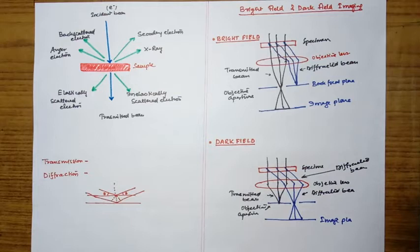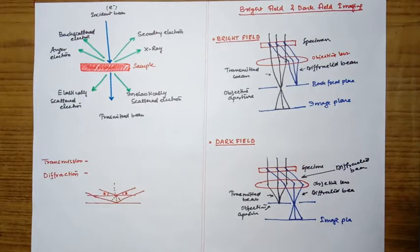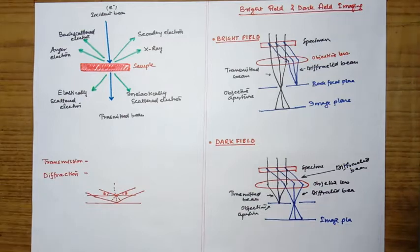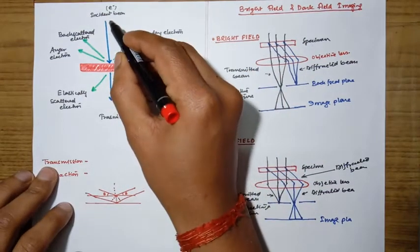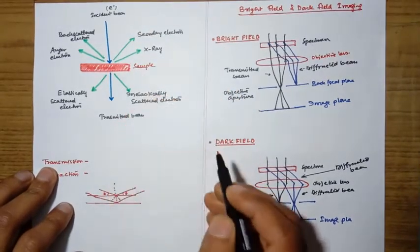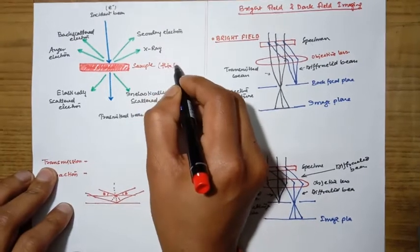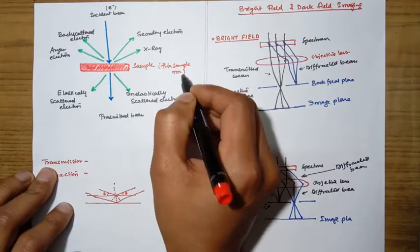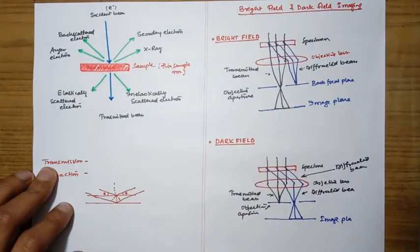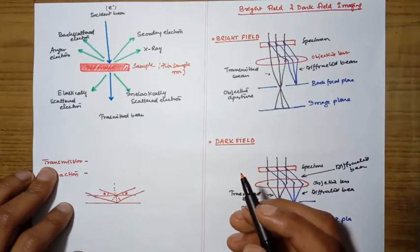Today we will discuss a very good concept in transmission electron microscopy — that is dislocation imaging. Starting from the basics and going to dislocation imaging, I will also solve one question which was asked in GATE. In TEM we use a very high energy electron beam incident on a sample. The sample must be very thin, in the nanometer range, because TEM works on the transmission principle.